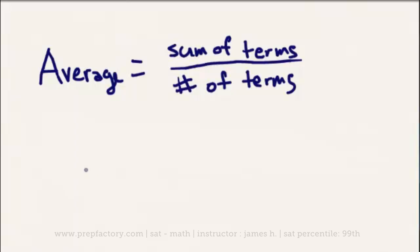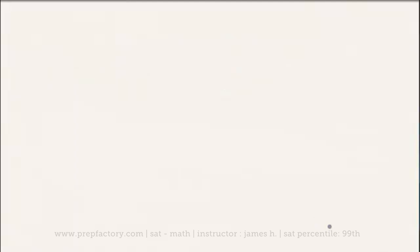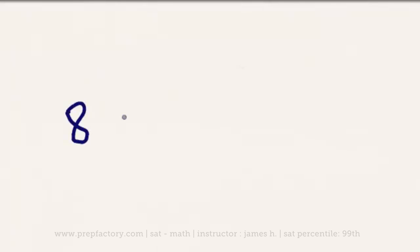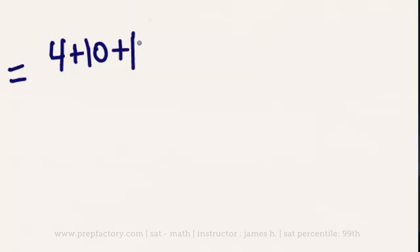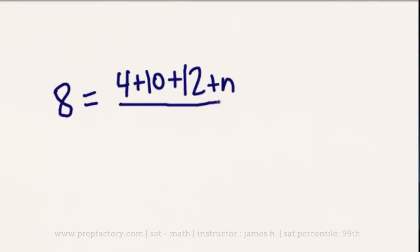The best way to demonstrate this is with a practice problem. Our question reads: if the average of 4, 10, 12, and n is 8, what is the value of n? We're given almost all the elements of the average equation. We know our average is 8, our other numbers are 4, 10, 12, and n — which is what we need to solve for — and we know we're dividing by 4 terms.